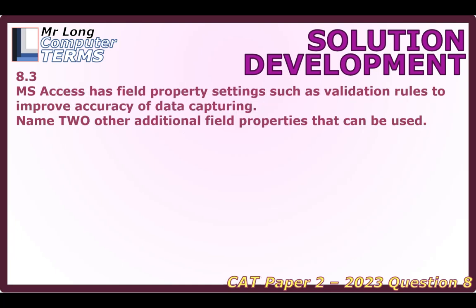Let's get into question 8.3 and talk about Microsoft Access. We have a field property setting such as validation rules that provide accuracy for data capturing, but we must name two other additional field properties that can be used. So we're talking about the tables, and if you think about all those properties when you are in the design view of the tables, we're looking at improving accuracy for data capturing.